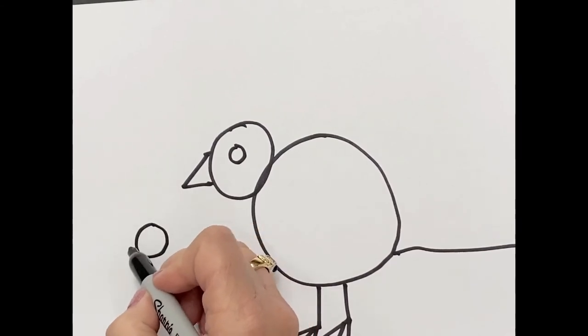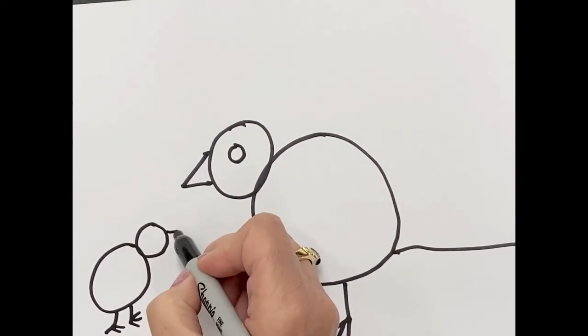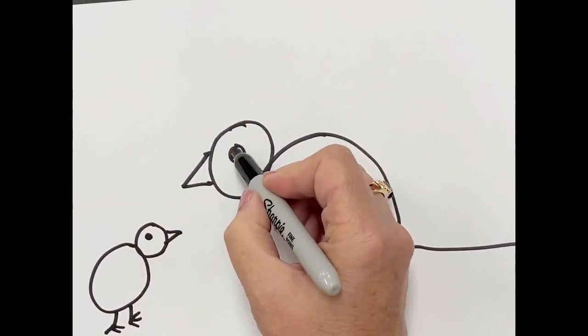Now my little chick looks lonely, so I'm going to give it a little friend. Two circles, although that one looks a little more oval, but that's okay. And a triangle and an eye.